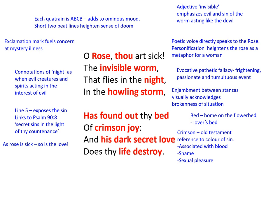If that weren't enough distress for us, we're told in the penultimate line: 'his dark secret love.' So there's something sinister and covert about this love that the worm gives the rose — it seems dangerous. And then to finish this poem with so much trauma that we can't forget it and lack closure, we're told it's your life it destroys. There's violence in the verb 'destroy.' The traumatic use of a semantic field of sin and dark imagery across both stanzas is what does not make this feel like a love poem.